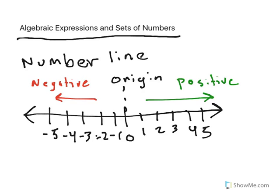What we have here is the number line. As you can see, we have the origin, we have the negative side in red, and the positive side in green.